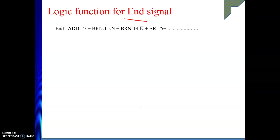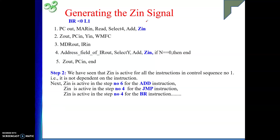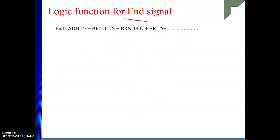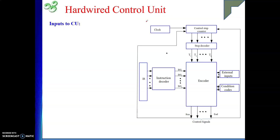Whatever I have explained is a general way of generating a signal using hardwired control unit arrangement. Now I will take you back to the block diagram of the hardwired control unit. In our hardwired control unit, we have this encoder block that is guided by the instruction decoder as well as the step decoder, and external inputs and condition codes.